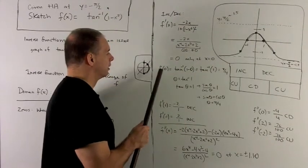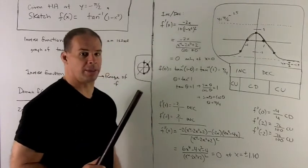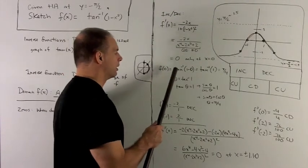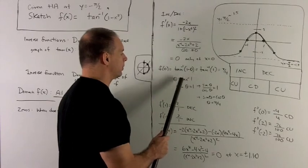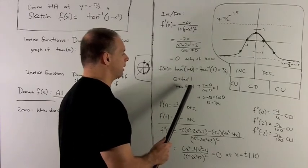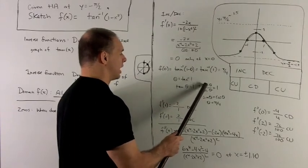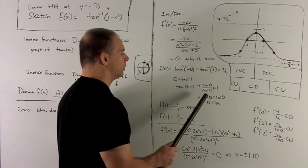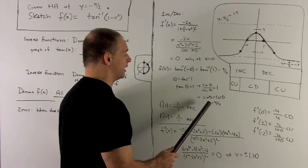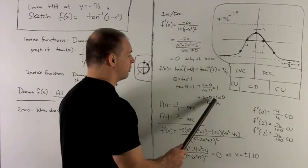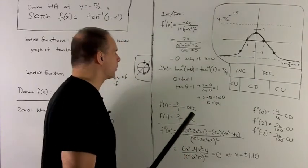We want to find f of 0, so I can plot the point. We want tan inverse of 1. I'll let theta be equal to tan inverse of 1. Tan theta equals 1 by pushing it over. We have sine theta over cosine theta equals 1, or sine is equal to cosine, and we know the reference angle is pi over 4.